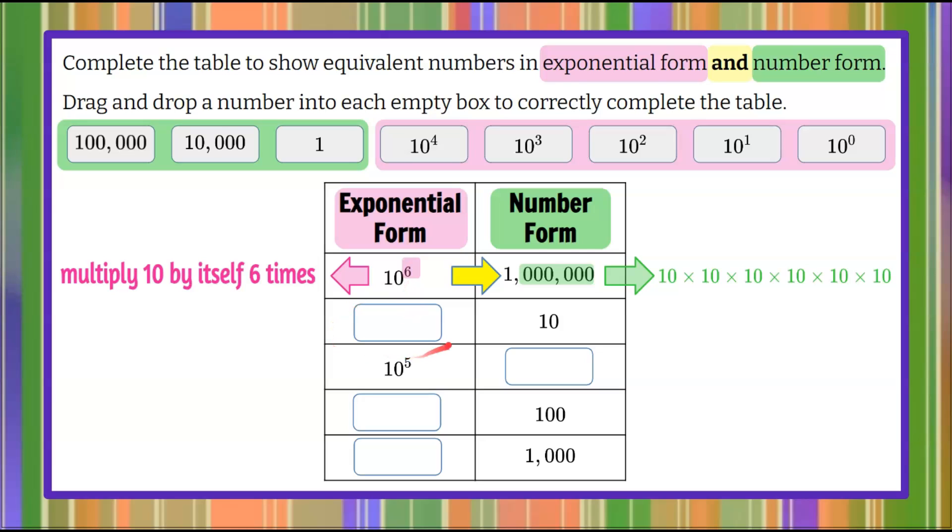So let's look at the first box that we need to fill in. It needs to be an exponential form that is equivalent to the number form 10. We know that we're looking from these answer choices and we need it to equal 10. We need to find 10 with an exponent of 1, and here it is right here. So we're going to take this and bring it over to this box.